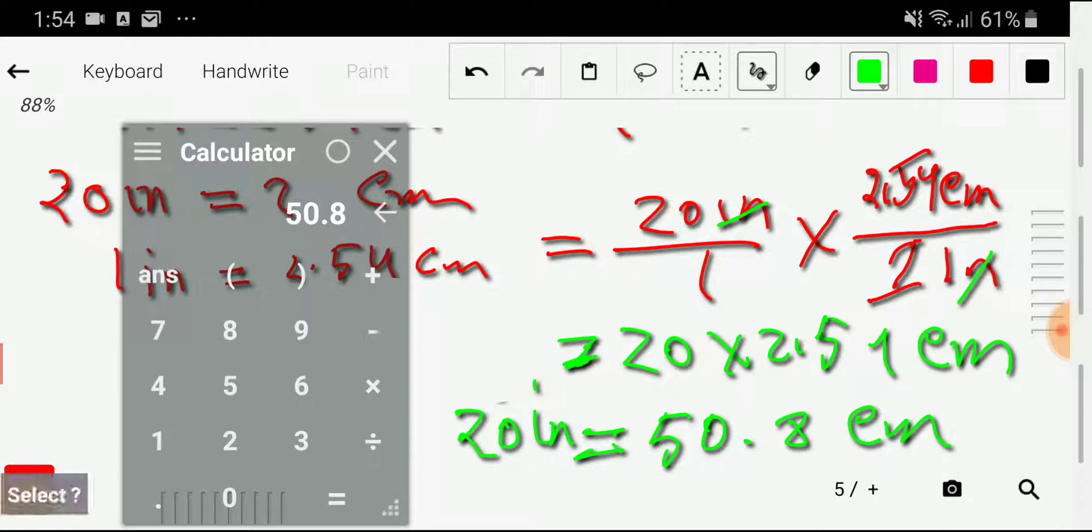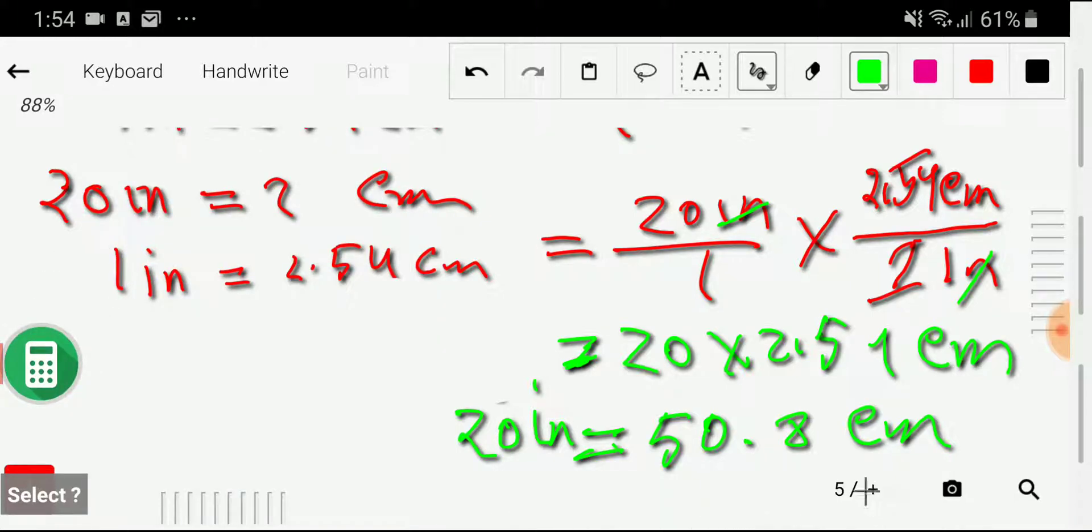That is, 20 inches equals 50.8 centimeters. That's about it. Thank you for watching this video. Be well.